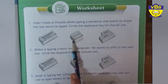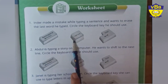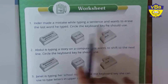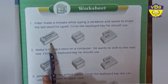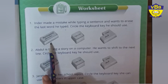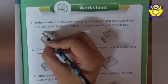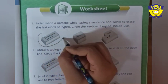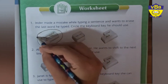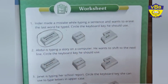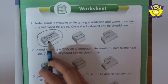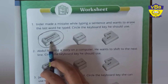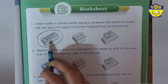So tell me — is it caps lock? Is it enter key? Or is it backspace? It is backspace, right? So we will circle backspace key. The backspace key is used to erase the last word which has been typed.